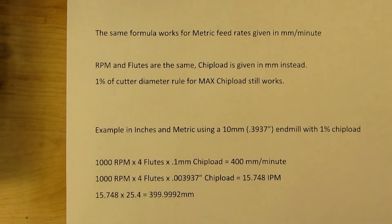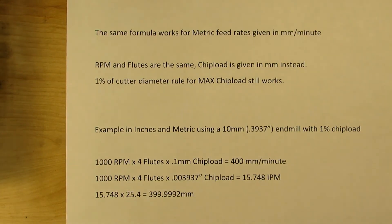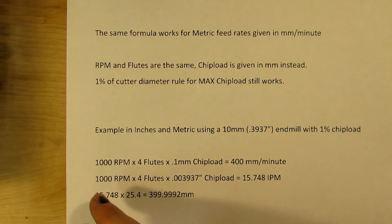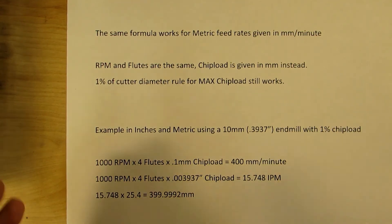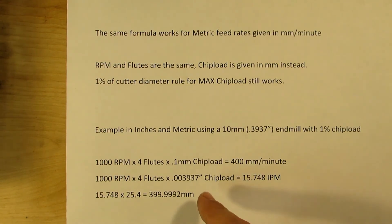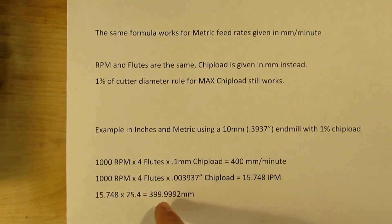The same formula works for metric feed rates as well — the only difference is the result is in millimeters per minute. RPM and number of flutes stay the same; chip load is just given in millimeters. The 1% rule still applies. For example, a 10mm end mill at 1,000 RPM and four flutes gives 400mm per minute — the inch equivalent of that chip load gives 15.748 inches per minute, and multiplying by 25.4 gives essentially 400mm per minute.